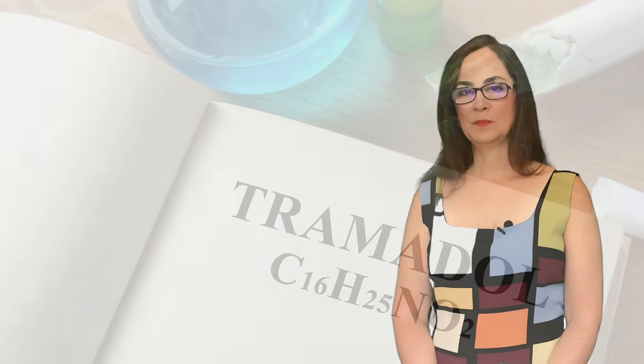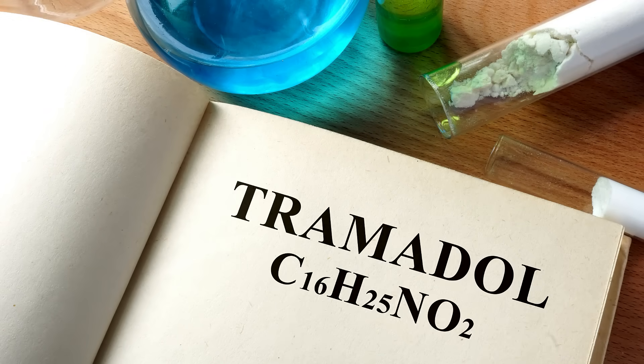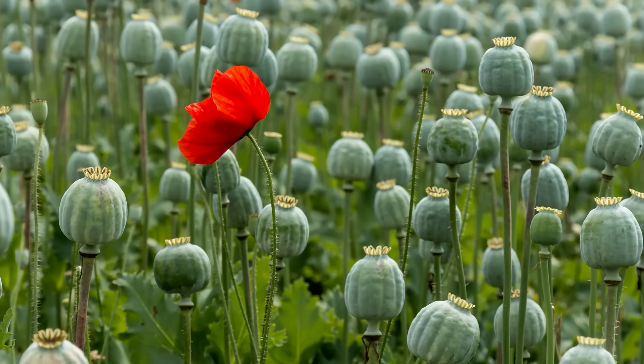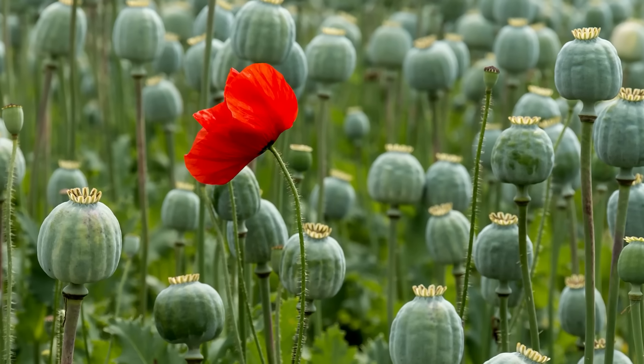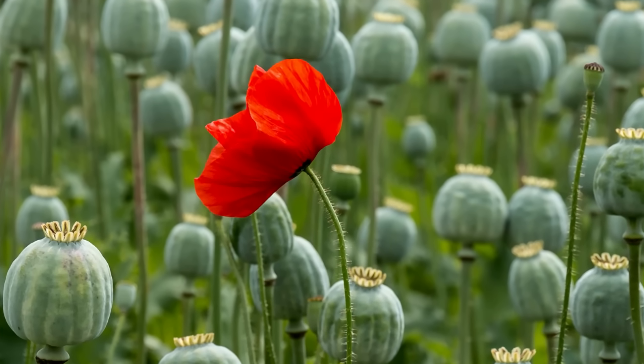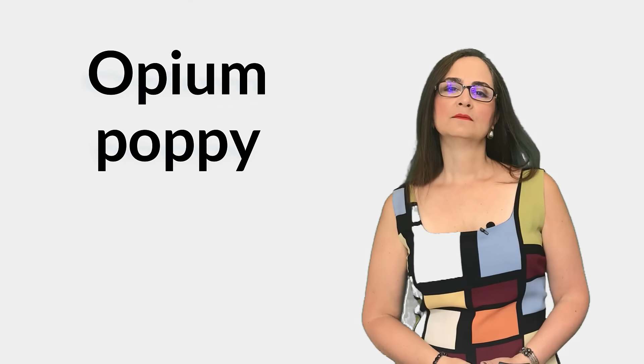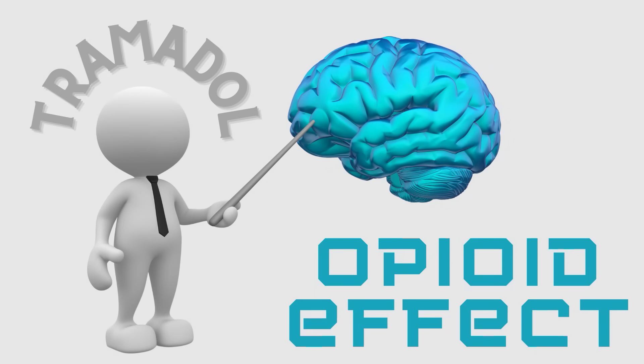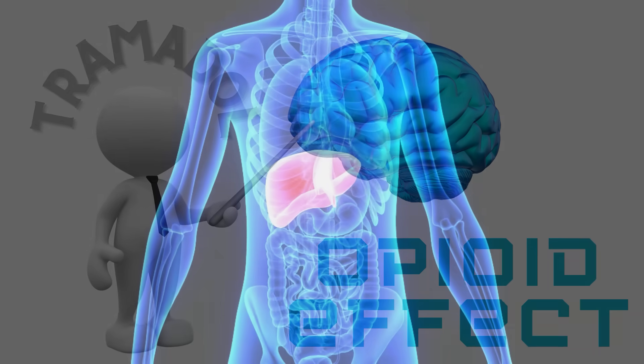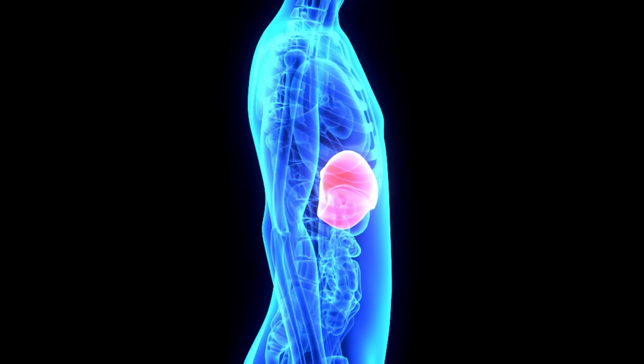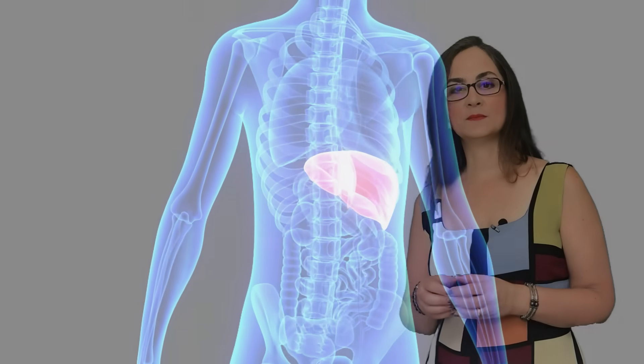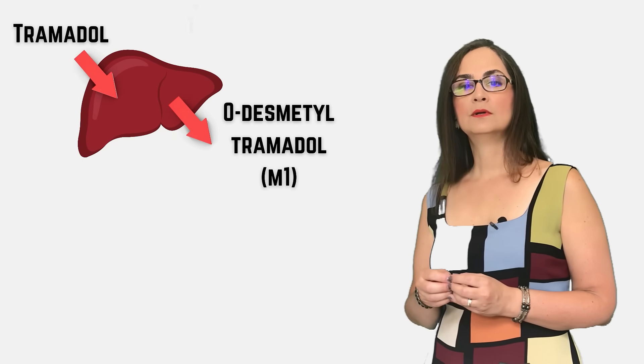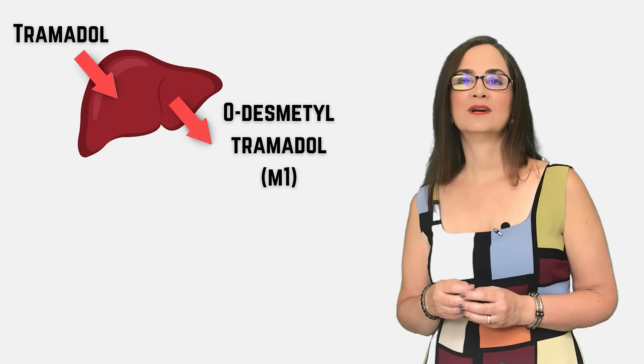Tramadol is a synthetic opioid. This means it is done in laboratory as opposed to naturally occurring opioids such as codeine and morphine, which are found in the opium poppy. When a person takes a Tramadol pill or tablet, a suppository or even by injection, Tramadol will need to be converted in the liver to a more potent substance called O-Desmethyltramadol or M1.